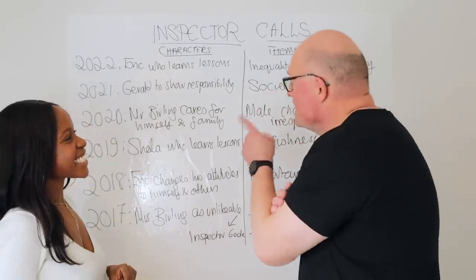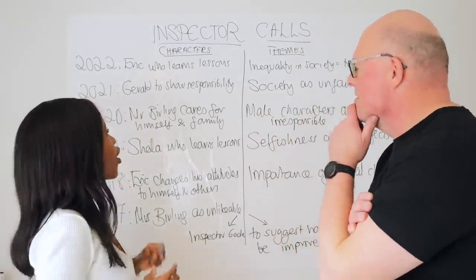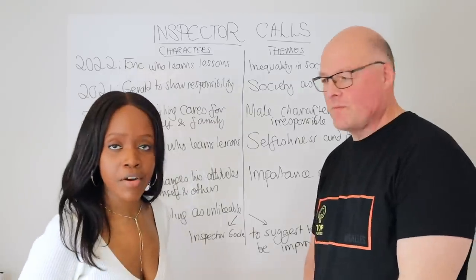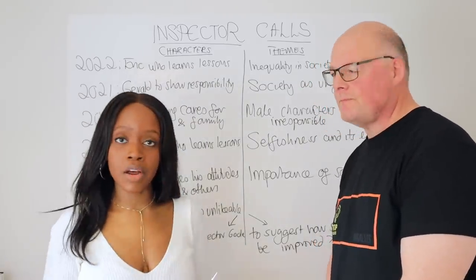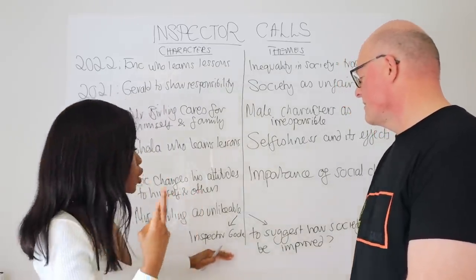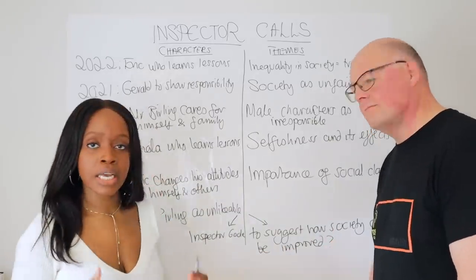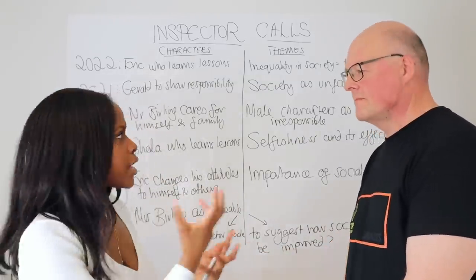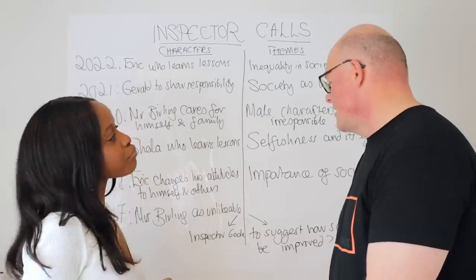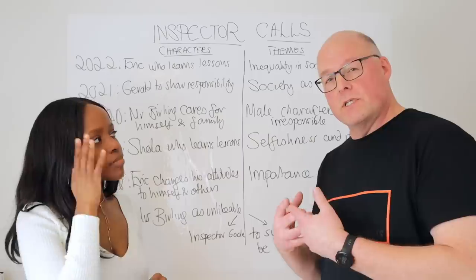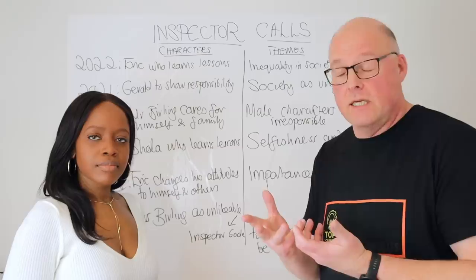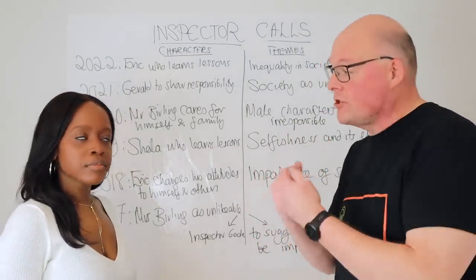So what have you detected is likely to come up next with the character question? When it comes to the character questions, in 2017 we had two characters that appeared. We had a Mrs. Birling question about how she was presented as unlikable, but then we also had an Inspector Goole question tied to a theme-related question — how Inspector Goole is used to suggest ways that society can be improved. Whatever character comes up, Priestley's main purpose is to change society, so that's your way in. Link that to any character you're presented with.